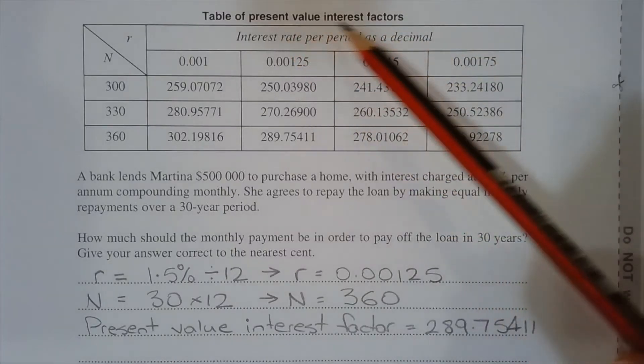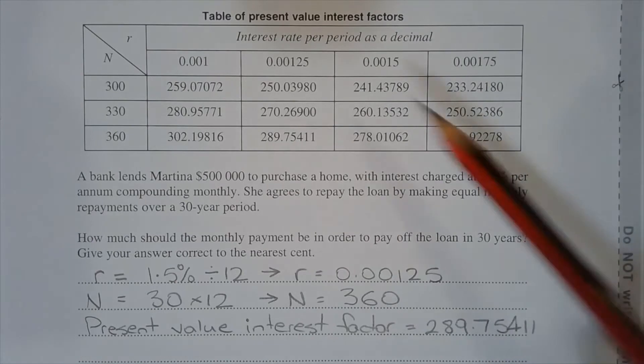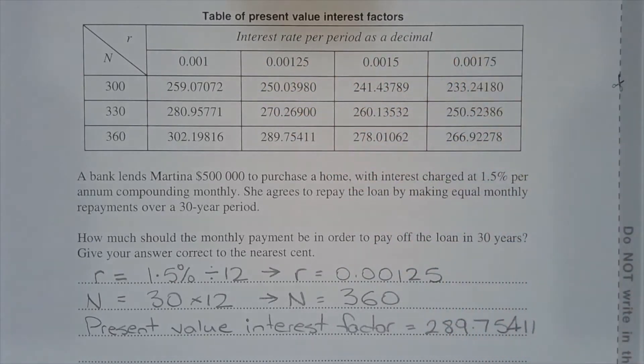To determine the present value interest factor to reference, we need to find the interest rate per period as a decimal and the number of compounding periods over the life of the loan.